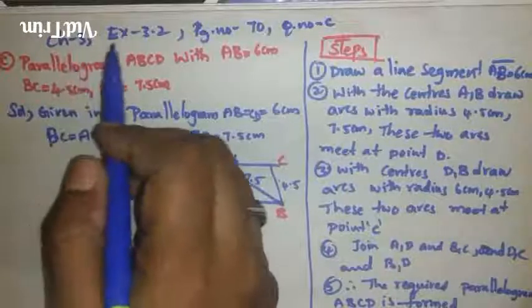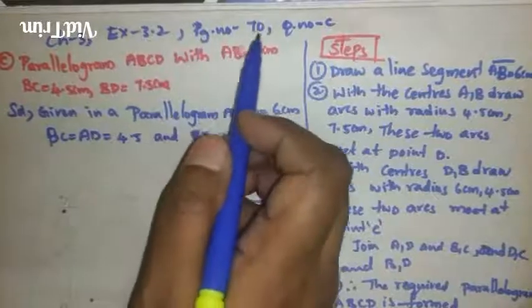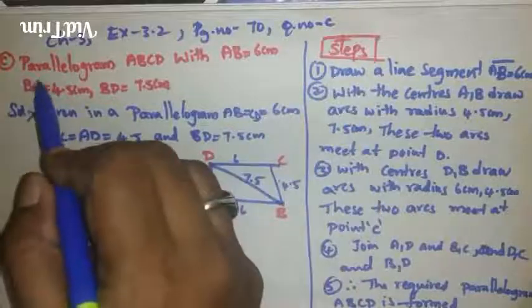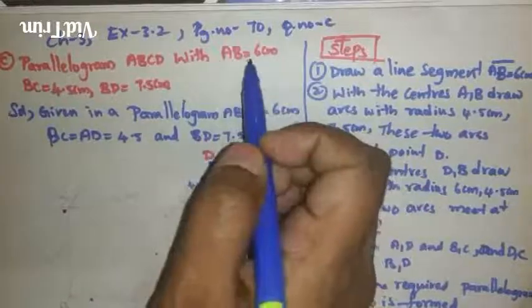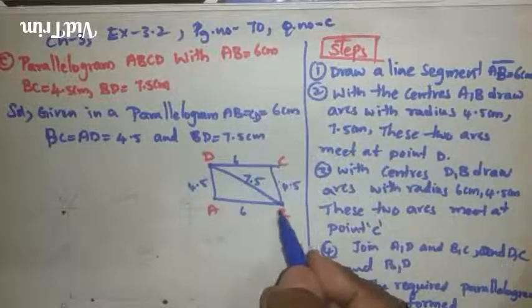Good morning students, let us see Chapter 3, Exercise 3.2, page number 70, question number C. Here is a parallelogram. We should construct a parallelogram ABCD with AB = 6 centimeters.